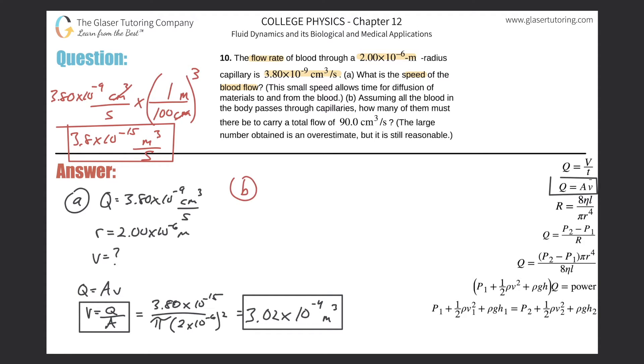What's letter B? Assuming all the blood in the body passes through capillaries, how many of them must there be to carry a total flow of 90 cubic centimeters per second? It's an overestimate. So now remember the idea that the flow rate in will equal the flow rate out. So we know that the total flow rate is going to be equal to 90.0 cubic centimeters per second.